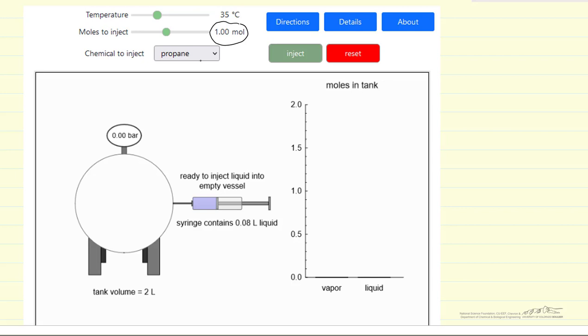When we press the inject button, it will show us how much liquid, how much vapor, and what the pressure is in the tank. We have two options: we can select either propane, which is a relatively high vapor pressure component, or toluene, which is a lower vapor pressure component.